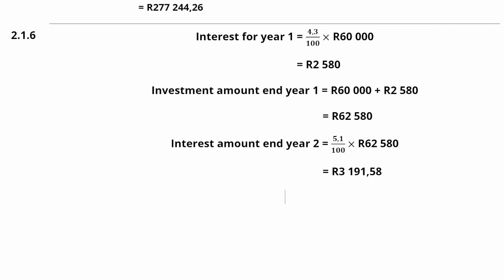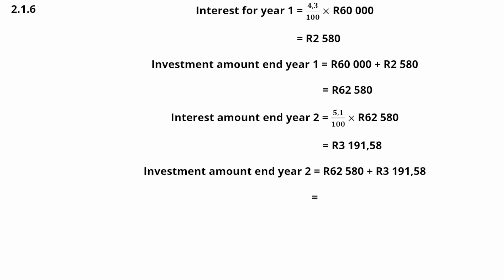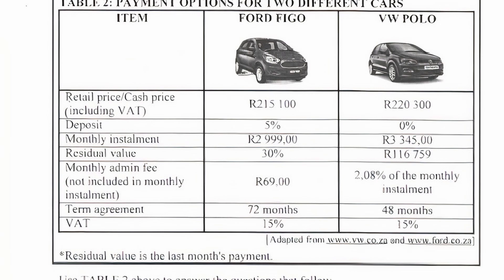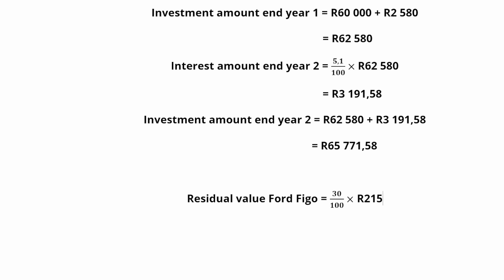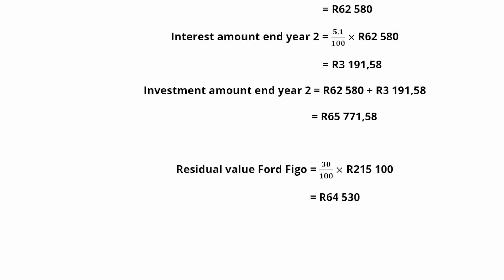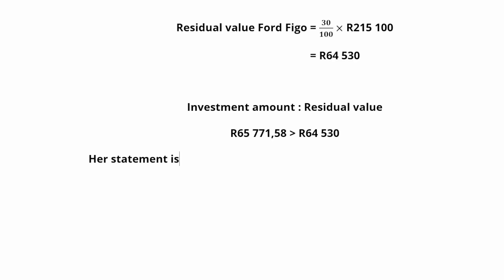From the table, the residual value of the Ford Figo is given as 30% of the retail price. So, the residual value is 30/100 × R215,100 = R64,530. Comparing the investment amount at the end of Year 2 to the residual value of R64,530, we see that the investment amount is greater than the residual value. Therefore, her statement is correct.